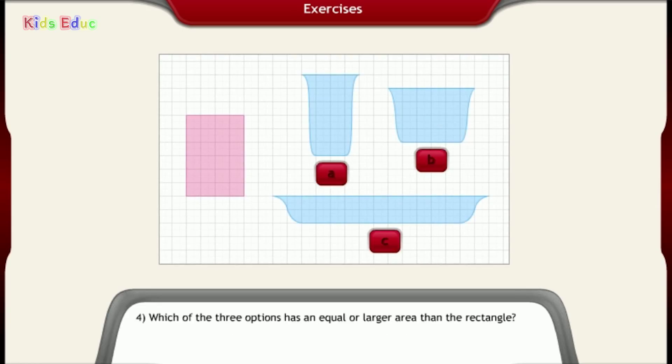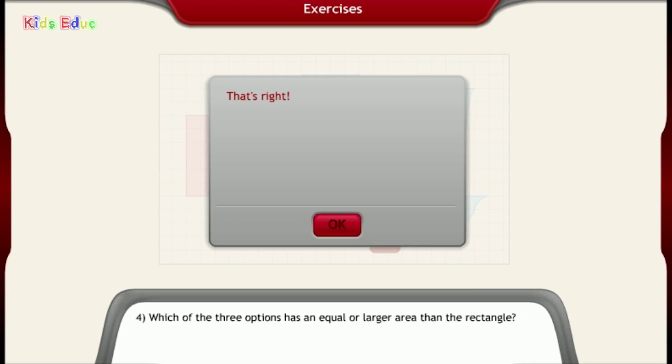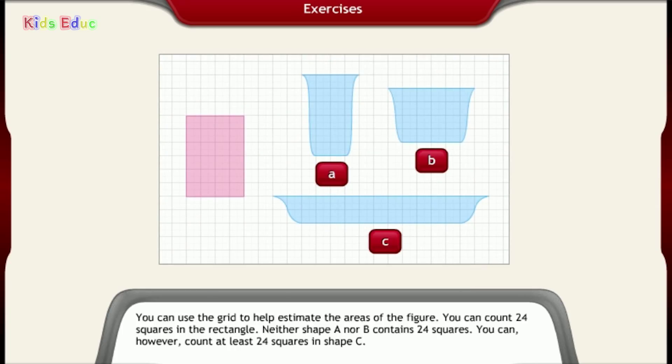Number 4, which of the three options has an equal or larger area than the rectangle? C. That's right. You can use the grid to help estimate the areas of the figure. You can count 24 squares in the rectangle. Neither shape A nor B contains 24 squares. You can, however, count at least 24 squares in shape C.